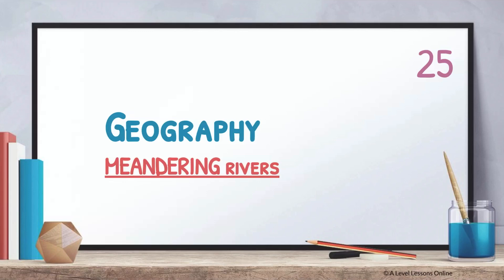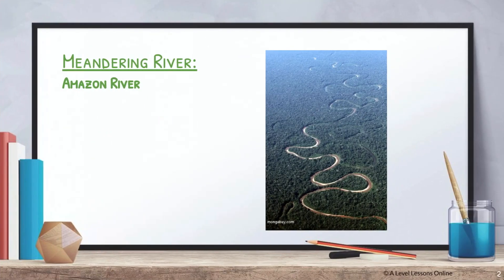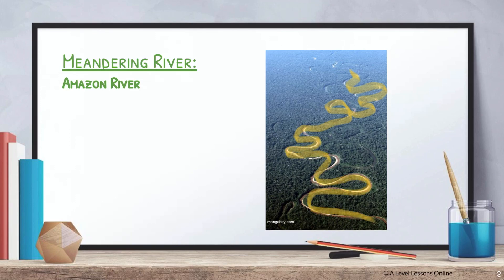Let's jump right into this. This is an example of a meandering river — the Amazon River. If you haven't heard of it, go search it up. It's a very long river. As you can see, it's a meander because it kind of goes in a snake shape, going around and around. Meandering is essentially anything that has a lot of these curved features in a river.